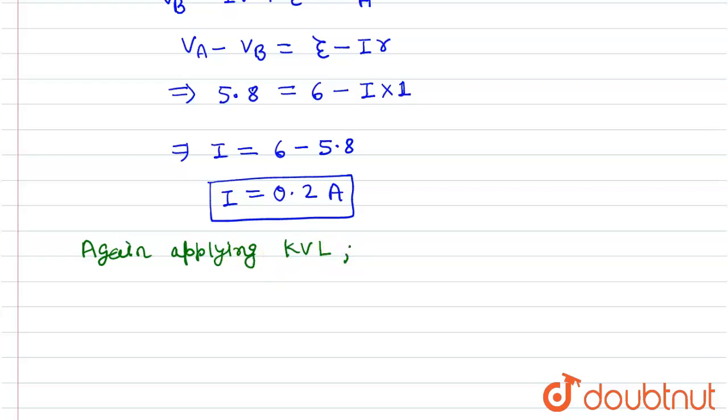Now what we will write, we have this way as A, this is the external resistance R, and this is as B. And current is flowing through this.